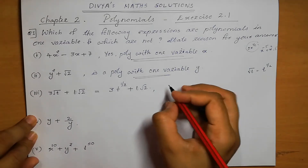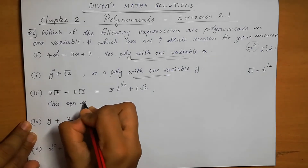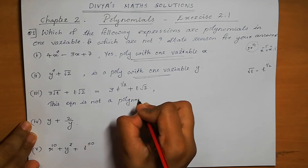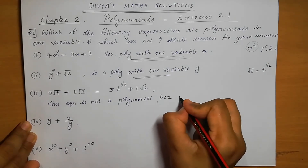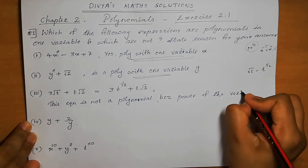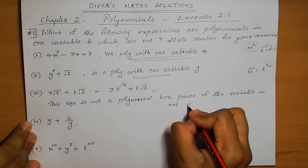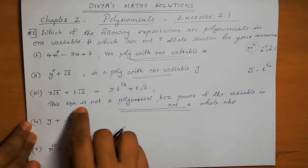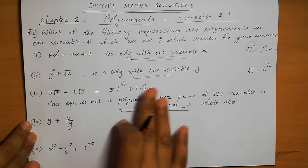So this expression is not a polynomial because the power of the variable is not a whole number. It is in one variable, but it is not a polynomial.